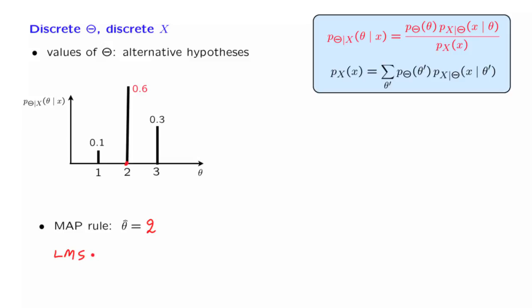An alternative way of coming up with an estimate could be the LMS rule, which calculates an estimate equal to the conditional expectation of the unknown parameter, given the observation that we have made. This is just the mean of this conditional distribution. In this example, it would fall somewhere around here. And the numerical value, as you can check, is equal to 2.2.